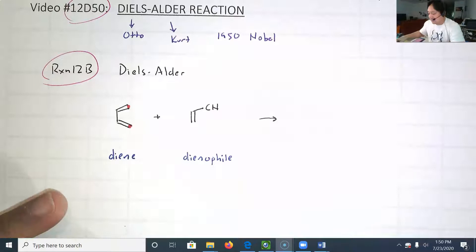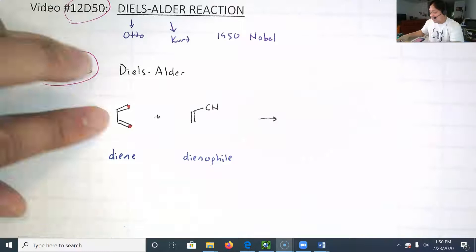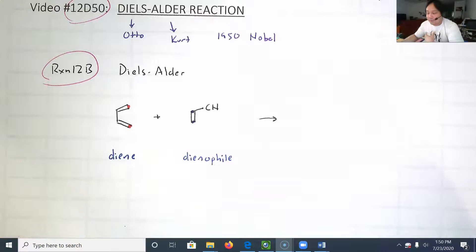The dienophile is typically just one carbon-carbon double bond. We'll see some variations in a bit. But really what you're thinking about is the diene reacting with the dienophile. Two red dots for the diene, I'm going to use blue dots for my dienophile. We're going to keep an eye on those two blue dots and two red dots.